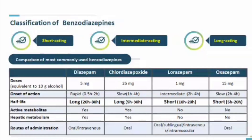Looking at the classification of benzodiazepines based on their action time, they can be short-acting, intermediate-acting, and long-acting. Among the most commonly used — diazepam, chlordiazepoxide, lorazepam, and oxazepam — the onset of action is faster with diazepam than chlordiazepoxide, then lorazepam, and very slow with oxazepam. Diazepam has a longer half-life compared to oxazepam, which is 5 to 20 hours.